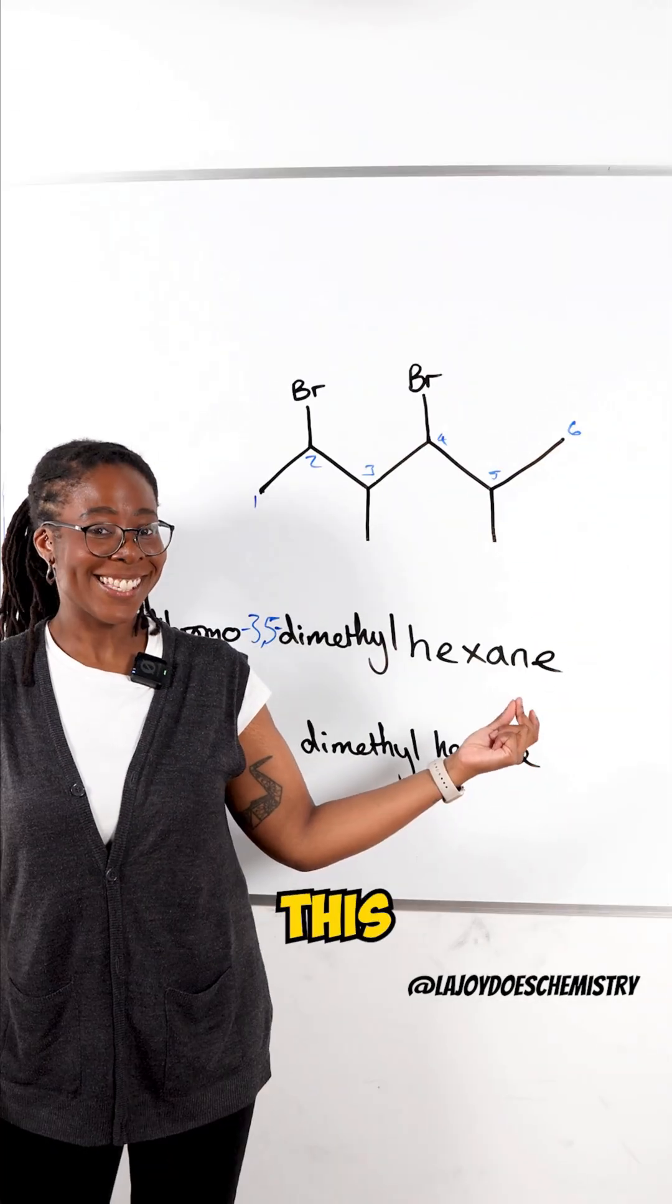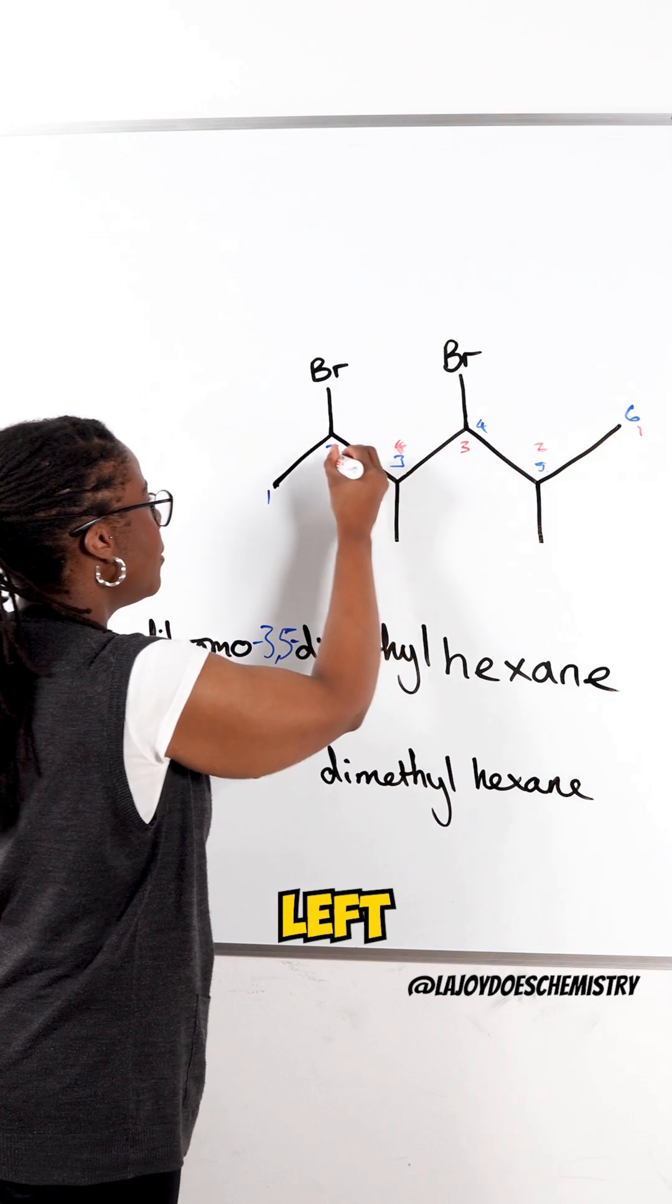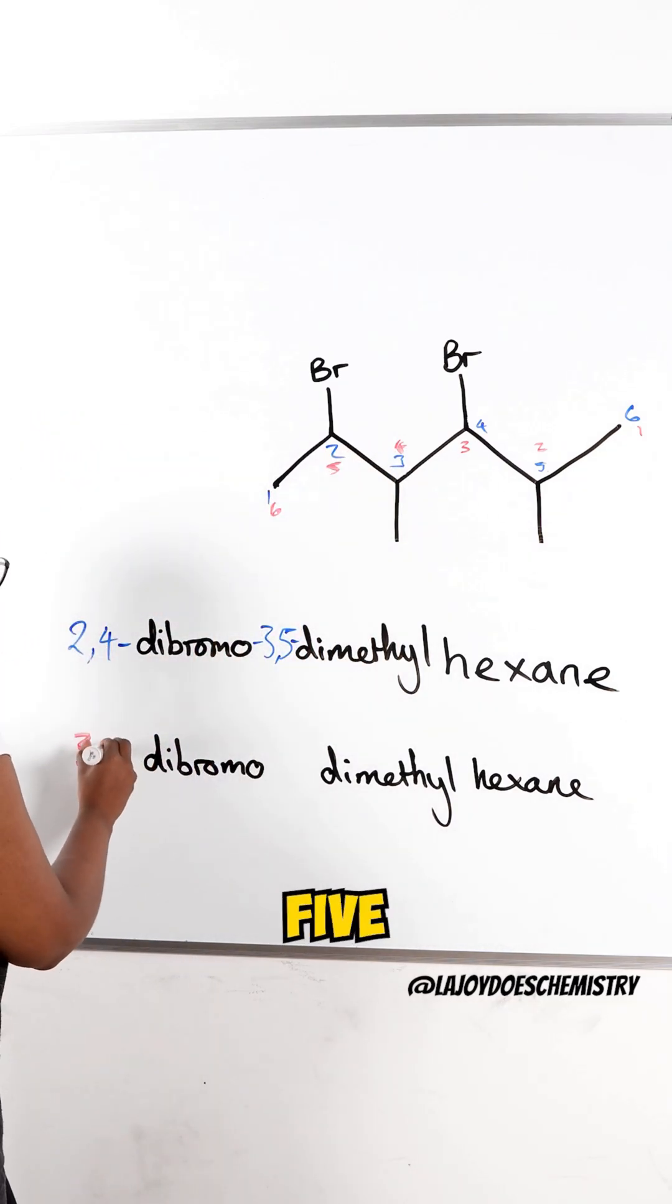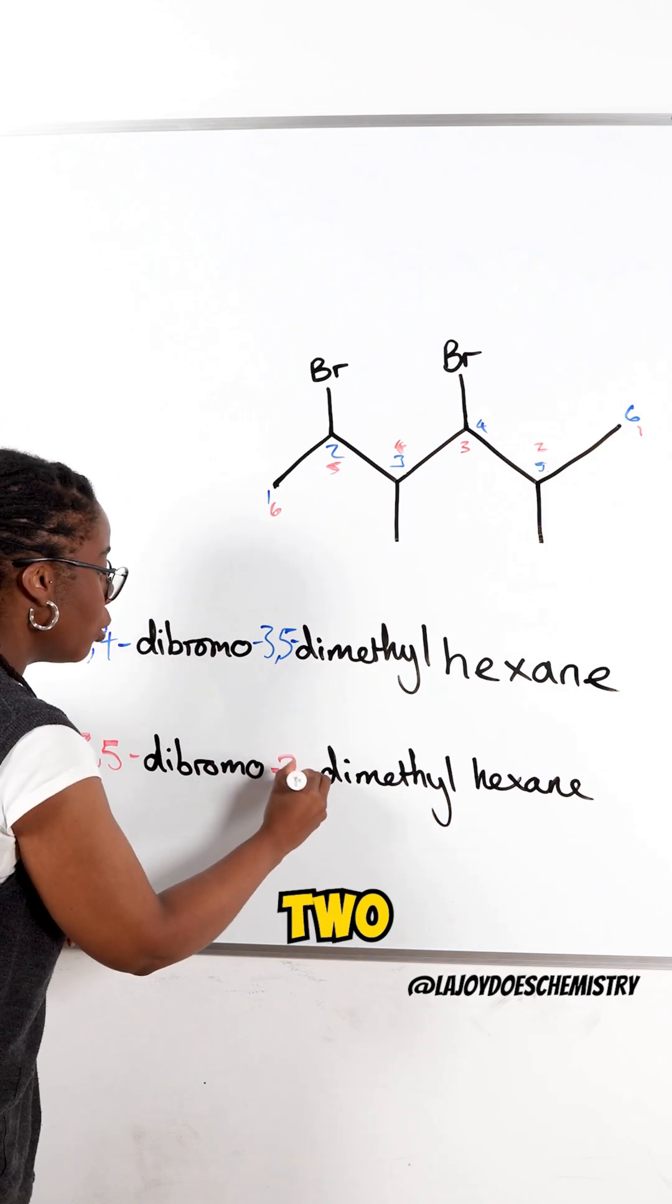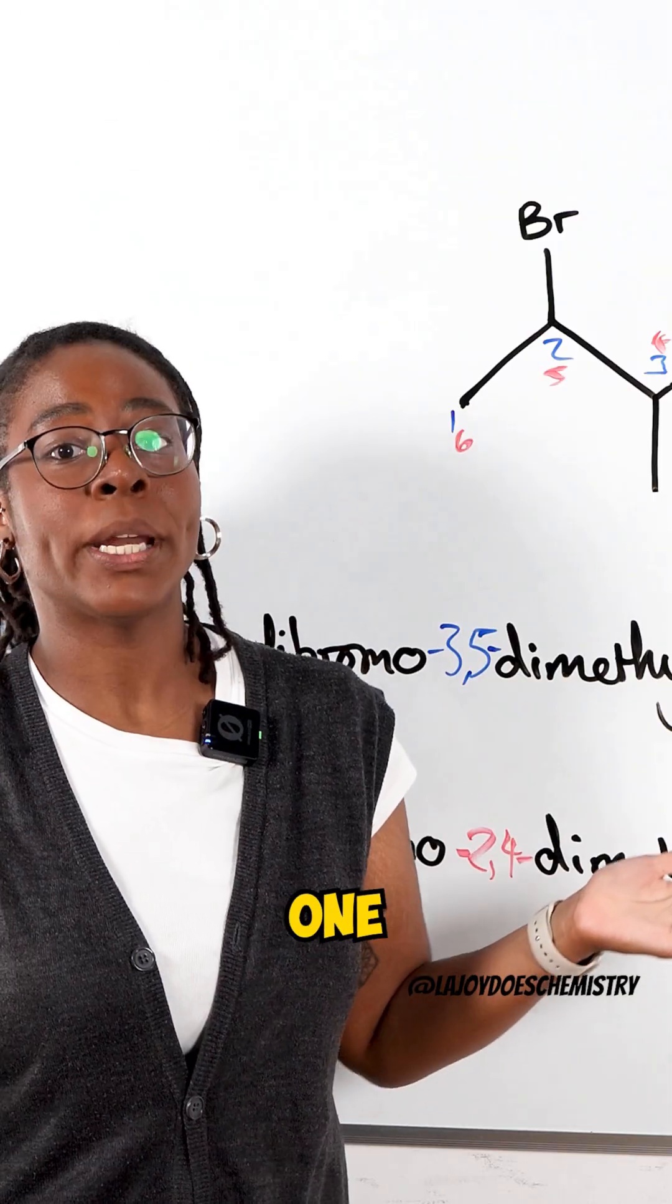Or would it be like this? Counting from right to left would make this three, five dibromo, two, four dimethyl hexane. Which one is it?